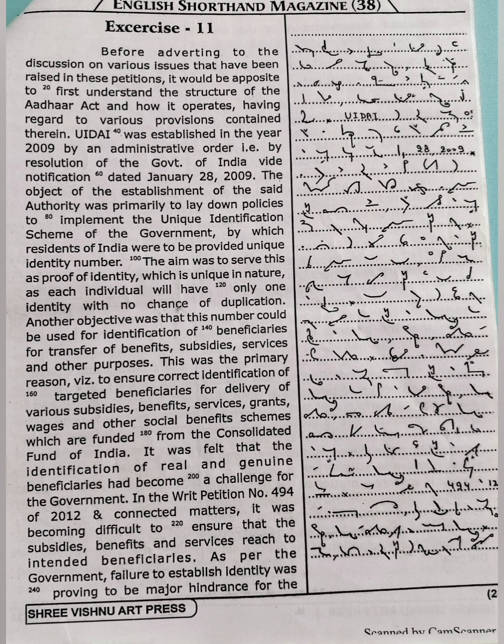By which residents of India were to be provided a unique identity number. Stop. The aim was to serve this as proof of identity which is unique in nature, as each individual will have only one identity with no chance of duplication. Stop. Another objective was that this number could be used for identification of beneficiaries for transfer of benefits, subsidized services, and other purposes. Stop.